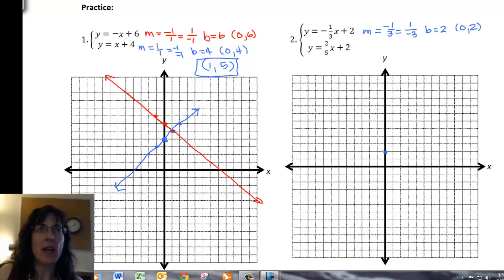So zero, two, and then my slope, negative one, so down one, positive three, that puts me here. Up one, negative three, that puts me here.